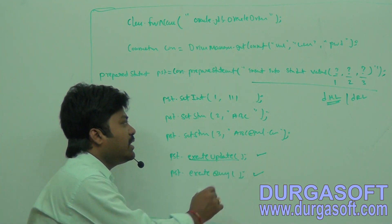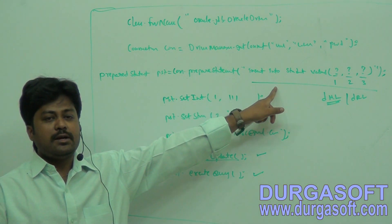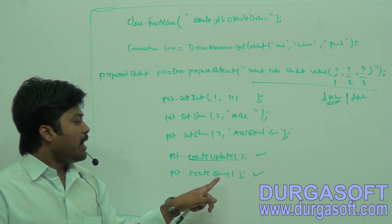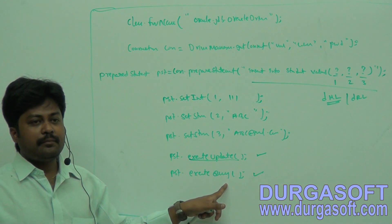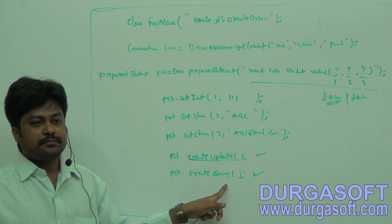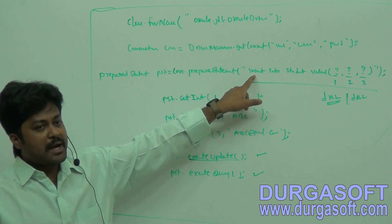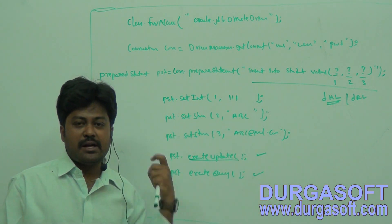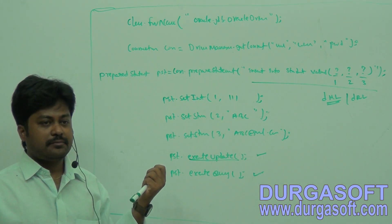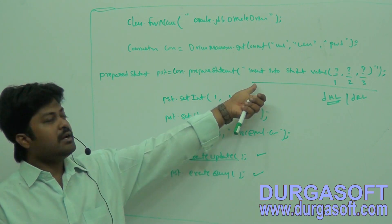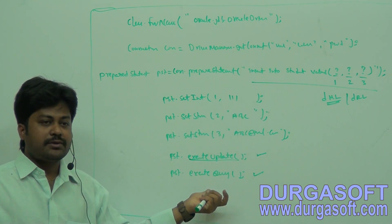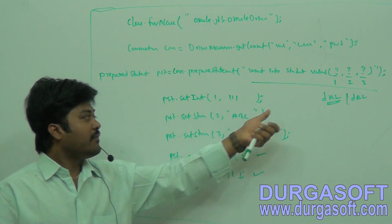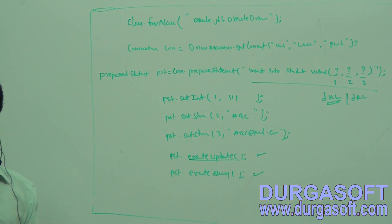If you call executeUpdate(), it will run a DML query. If you call executeQuery(), it will run a DRL query. If you write a DML statement and call executeQuery(), that is not a suitable statement — executeQuery expects data returned from the database and executes only DRL statements. So if it is DML, call executeUpdate; if it is DRL, call executeQuery.